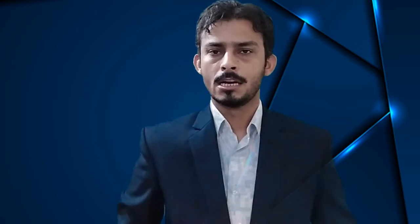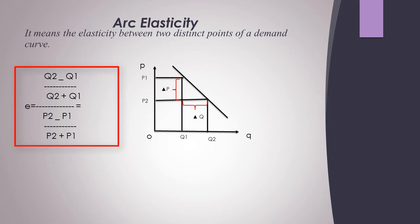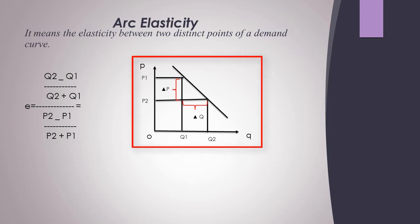The final type is arc elasticity, which explains the elasticity between two distinct points on the demand line. The formula is: (Q2 minus Q1) divided by (Q2 plus Q1), divided by (P2 minus P1) divided by (P2 plus P1). In words, it is the difference of Q divided by the sum of Q, divided by the difference of P divided by the sum of P. You can also see the demand graph here.